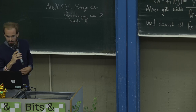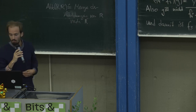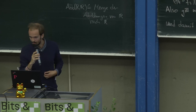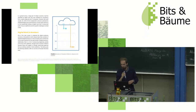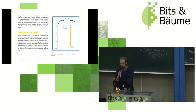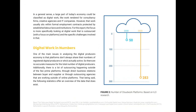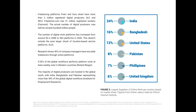Digital work in numbers: the number of cloud work platforms has increased from 50 in 2008 to 283 globally just two years ago. This area of digital work and digital platforms is rising massively. It's a global phenomenon, and a large part is taking place in Asia — India, Bangladesh, Pakistan, Philippines. These are the largest suppliers of online work.